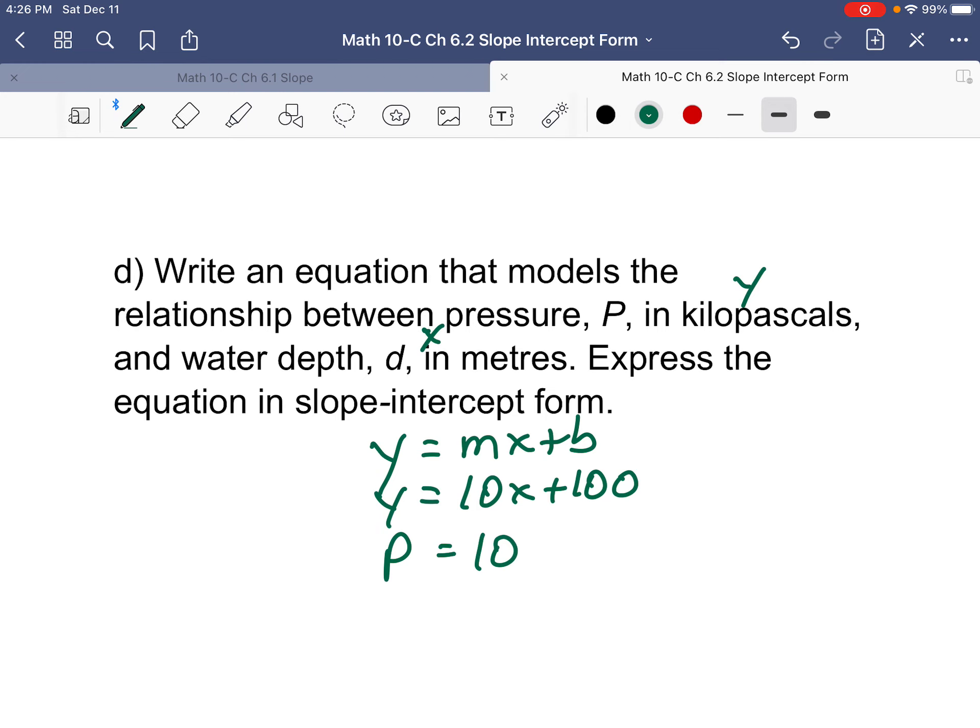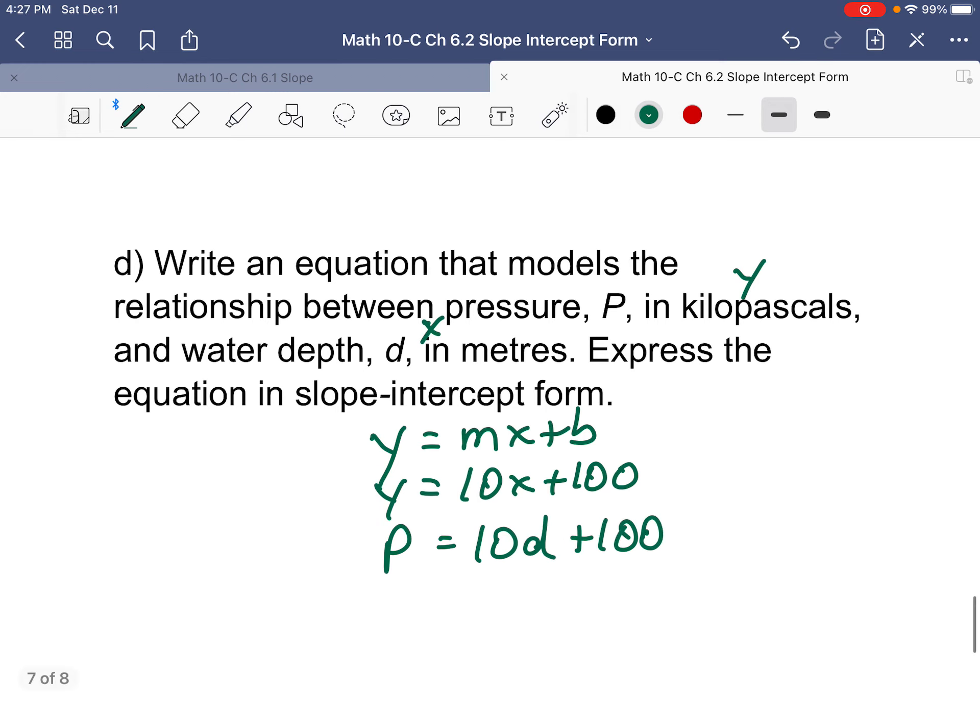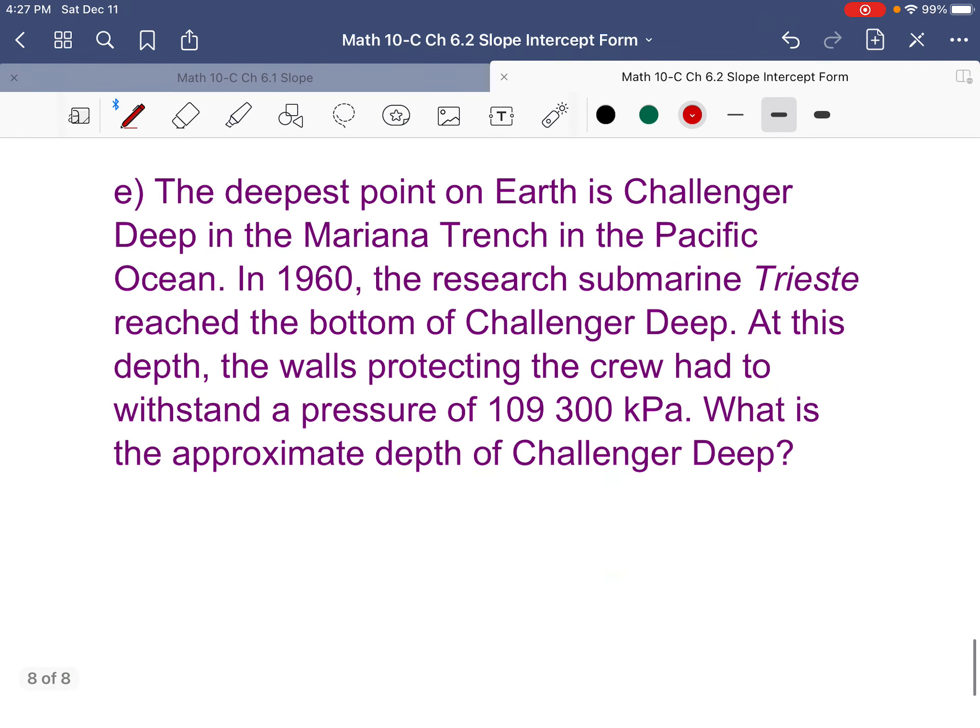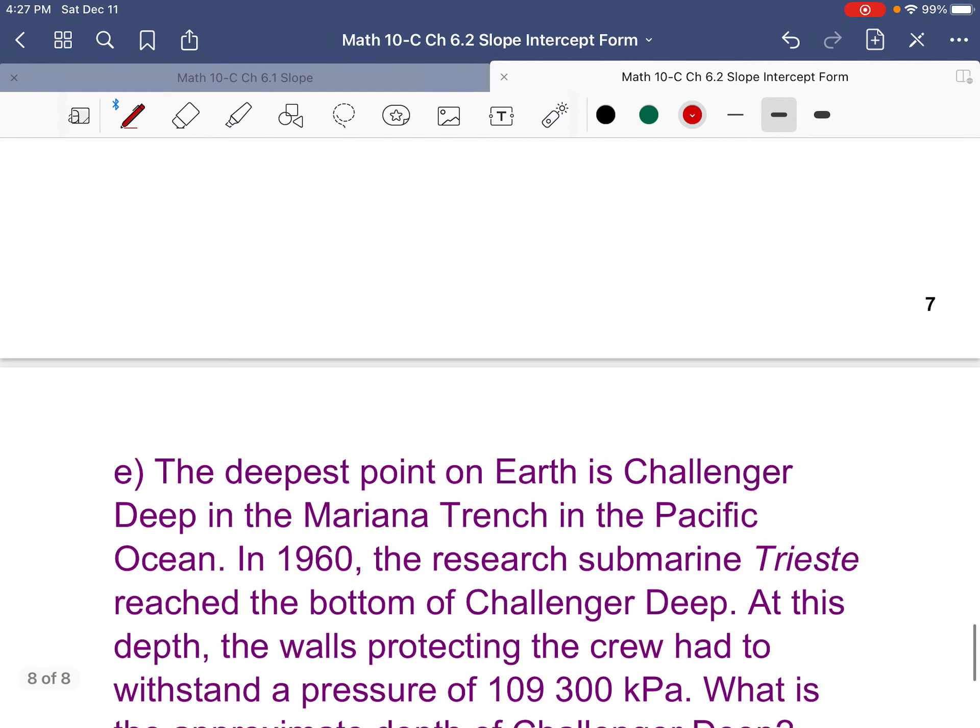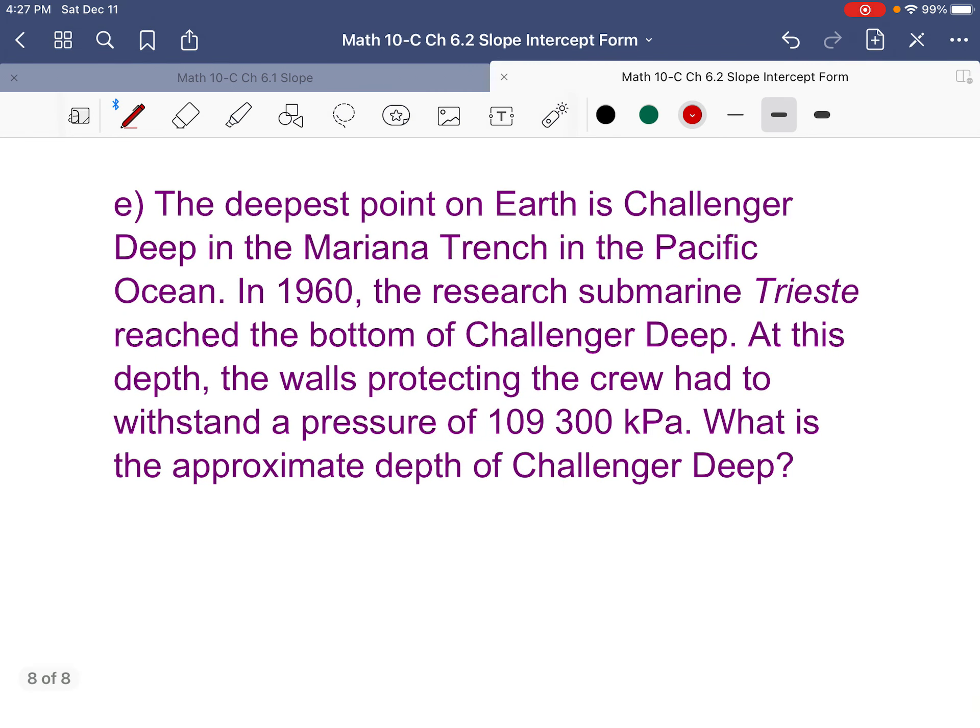Now, I'm supposed to do this in pressure, which is y, and water depth x. So I'm supposed to go p equals 10d plus 100. Now you notice I did it this way, because instinctively that's what I do on a graphing calculator. If I had to graph it on a graphing calculator, that's what it would say. Y equals 10x plus 100.